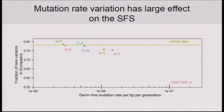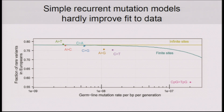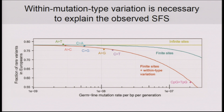We next wanted to see if we can use the signature that mutation rate variation leaves on the SFS to actually learn something about mutation rate variation itself. To do this, we fitted different mutational models to the observed differences between the SFS of mutation types. The infinite sites model would suggest the same SFS for all mutation types and therefore provides a poor fit to the data. Even a simple finite sites model — which accounts for recurrent mutation when the mutation rate is high — improves the fit only very little. It turns out that only when we considered within-mutation-type variation were we able to capture the large differences between the SFS of different mutation types.